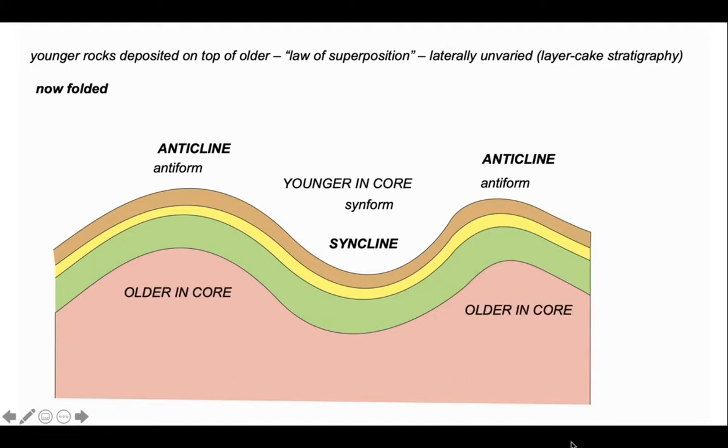So we have these simple relationships of older in the core makes an anticline, younger in the core makes a syncline. So it's the stratigraphic order of rocks that allows us to use the terms anticline and syncline. It's the inclination or dip of the rocks that tells us whether we're dealing with an antiform or a synform.